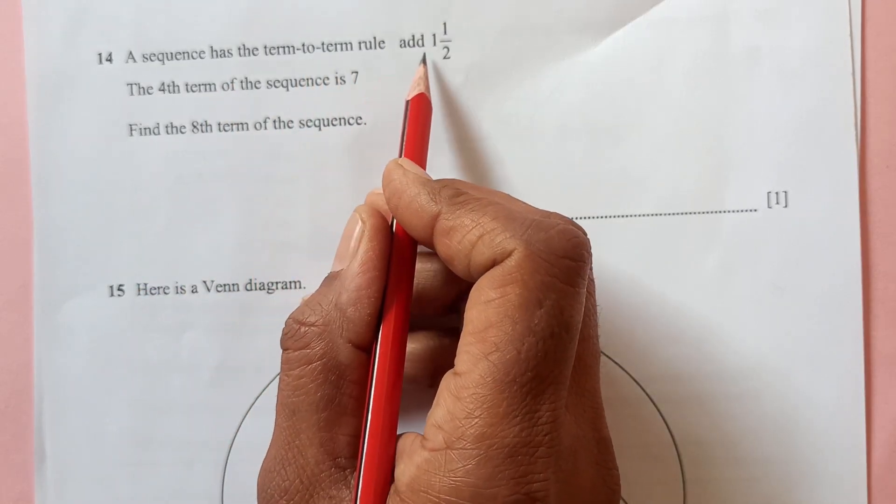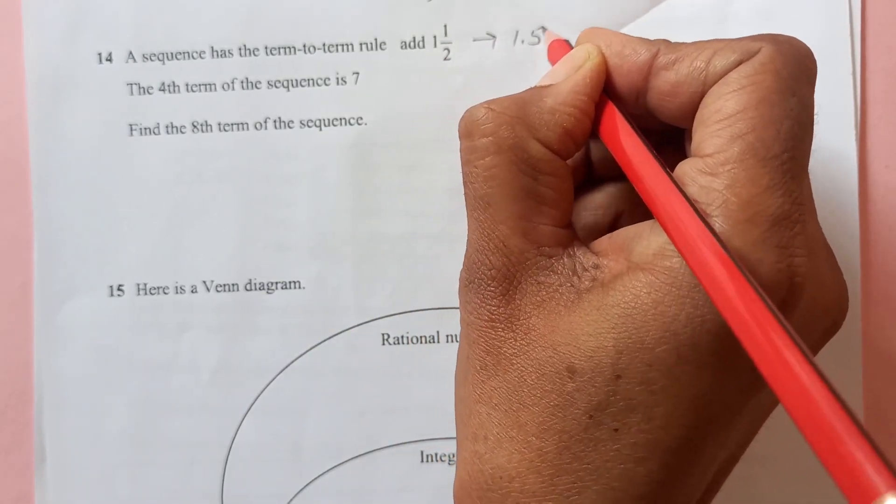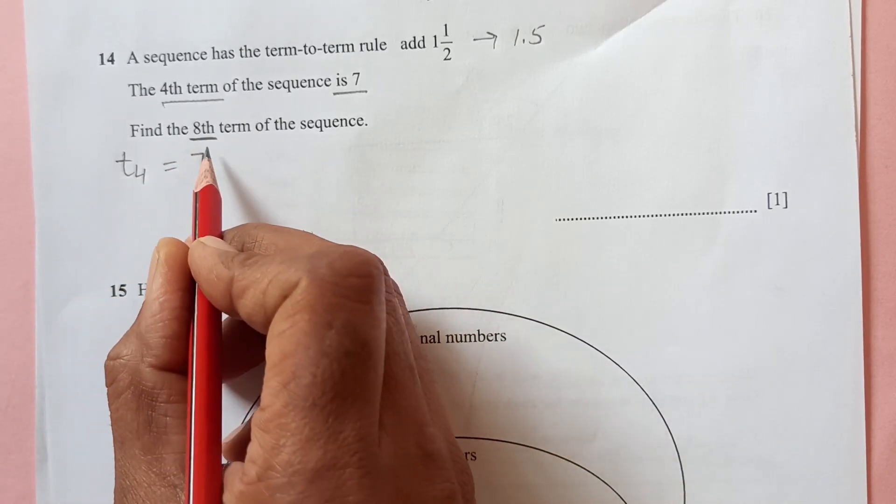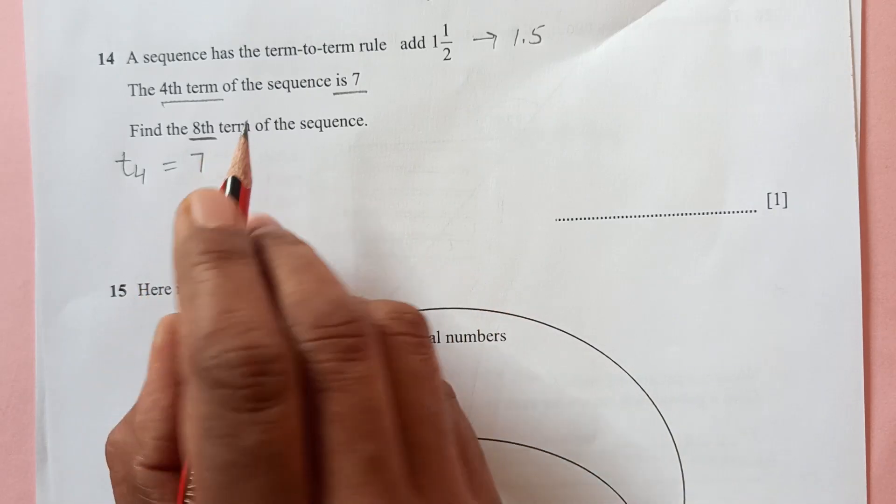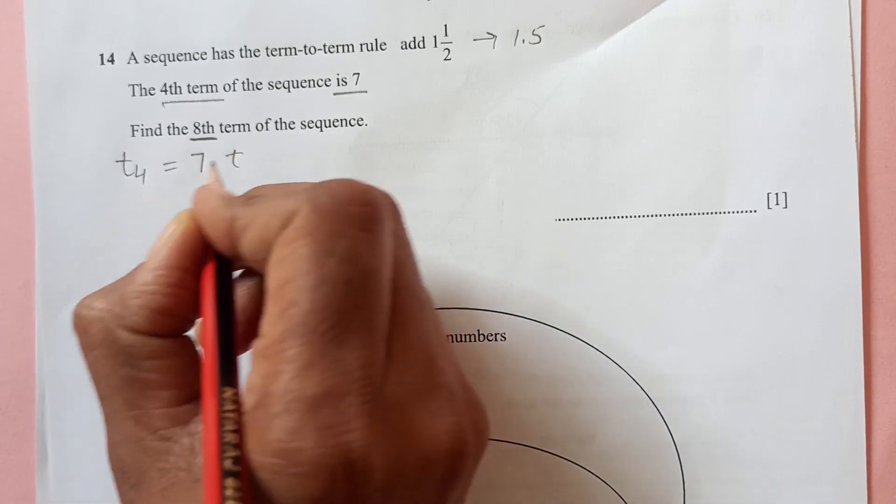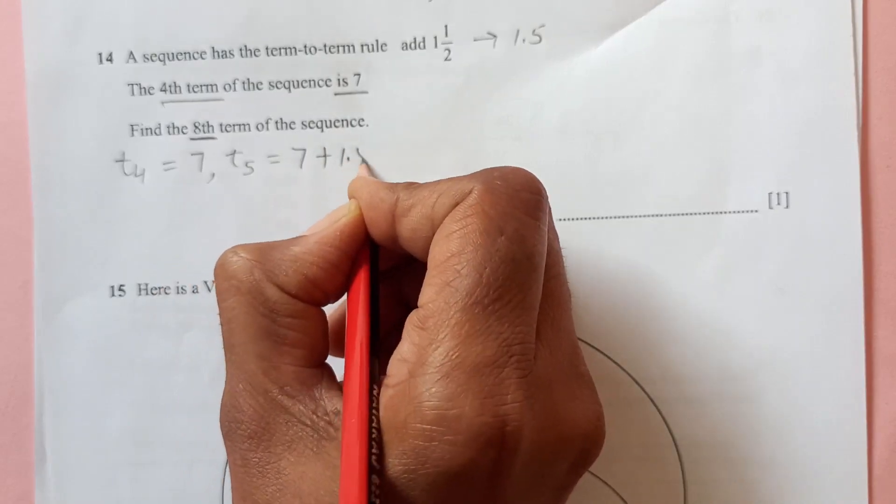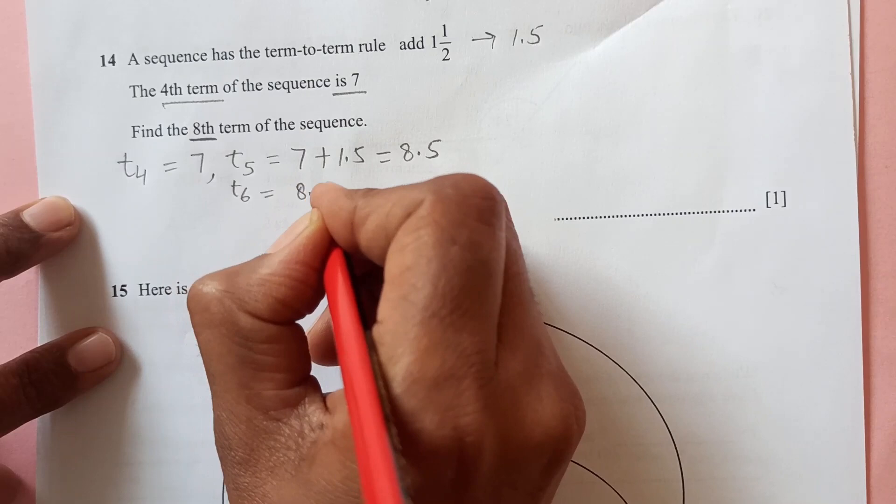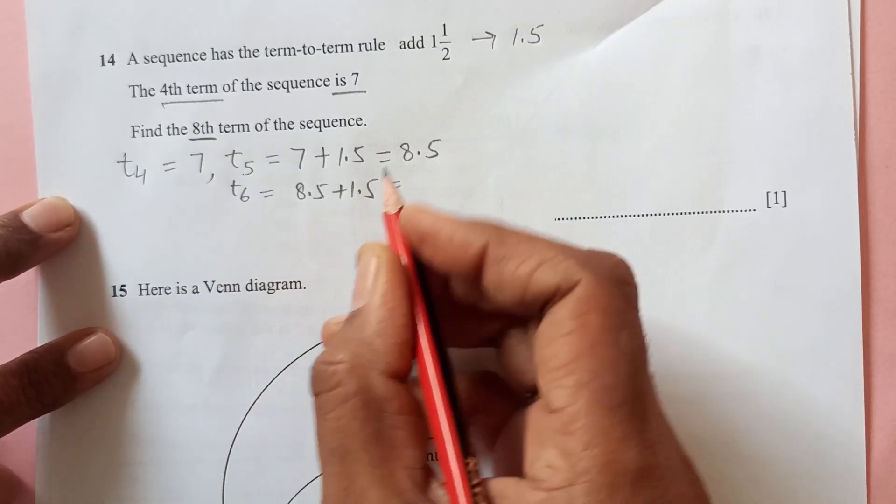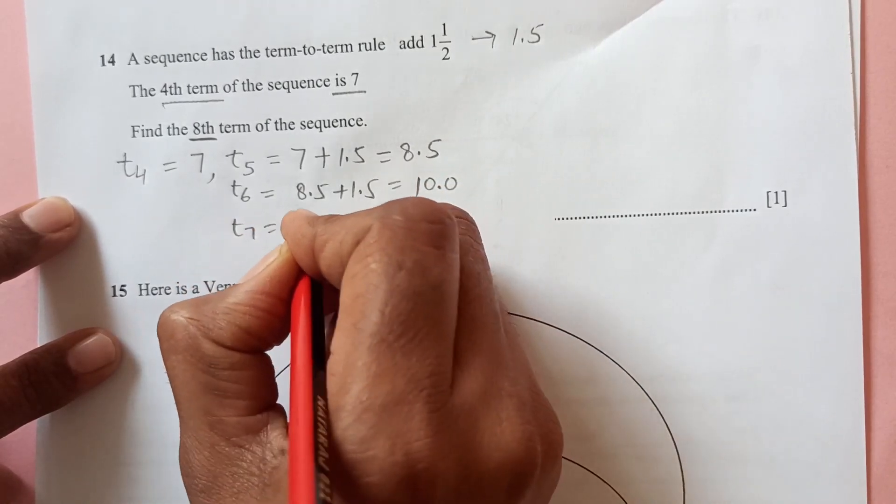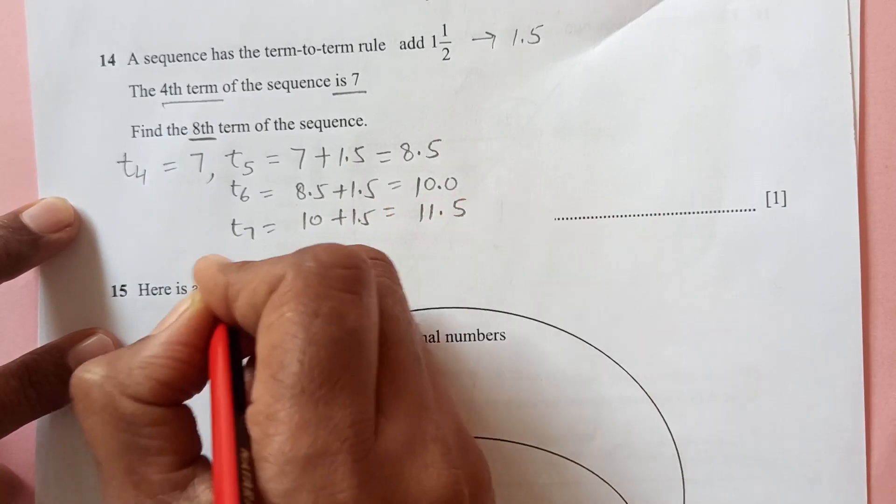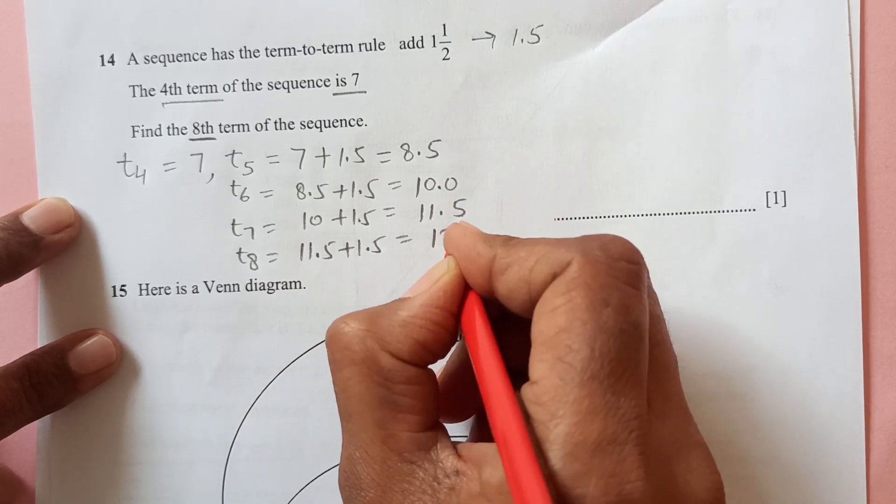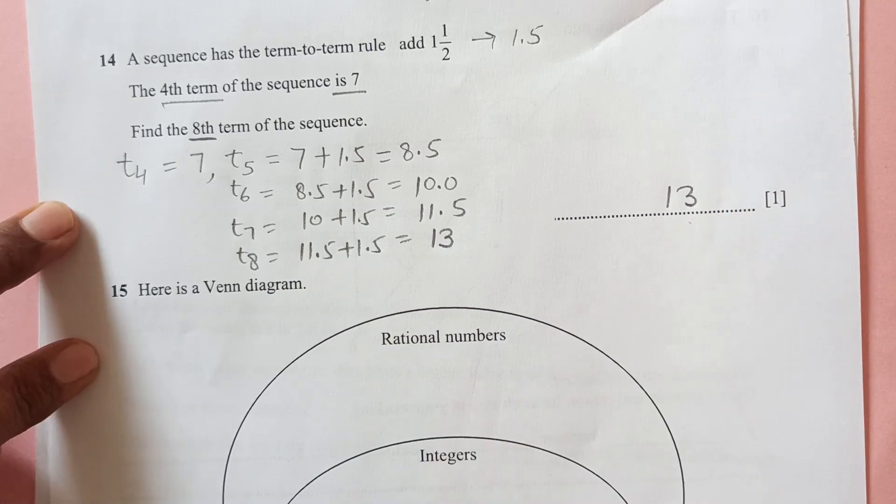A sequence has term to term rule add one and a half. One and a half means 1.5. So the fourth term of the sequence is 7, that means T4 is 7, and find the eighth term. So T5, after T4, fifth term is going to be 7 plus 1.5, so this is 8.5. Then T6, sixth term, 8.5 plus 1.5 that is 10. And T7 is 10 plus 1.5 that is going to be 11.5, and T8 is 11.5 plus 1.5 again, that is 13. So final answer is going to be 13.